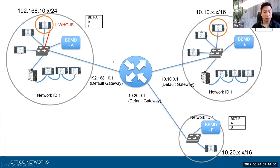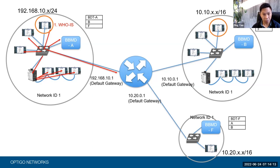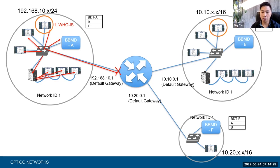If we don't have BBMDs, it's not going to work. The WhoIs will be broadcasted — and I want to reiterate here, it's going through a BACnet router. The BACnet router is still transferring the broadcast, so BACnet routers do not block BACnet broadcast. But this one will hit the IT router, the IP router, and the IP router will block it. So if we just stop there, we will never be able to discover it.